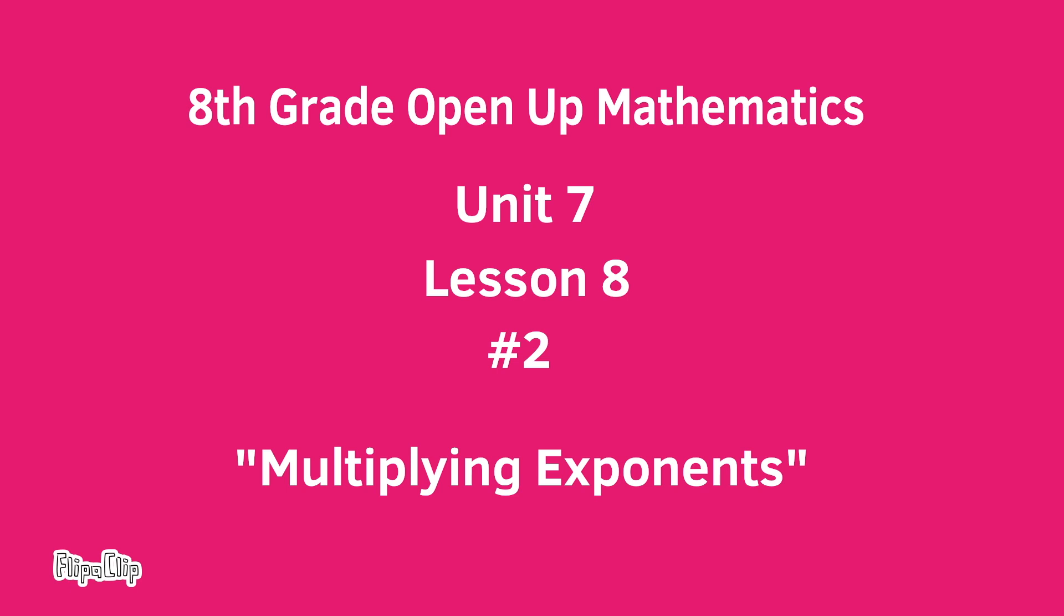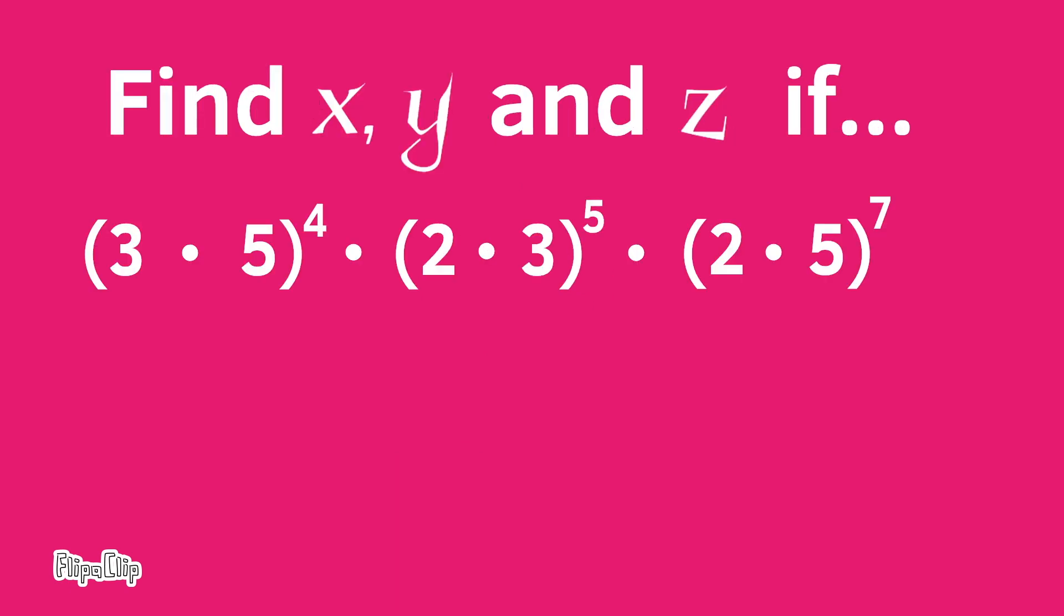8th grade Open Up Mathematics, Unit 7, Lesson 8, Number 2: Multiplying Exponents. Find x, y, and z if (3 × 5)^4 × (2 × 3)^5 × (2 × 5)^7 = 2^x × 3^y × 5^z. Take a moment to look at it and think of a strategy.